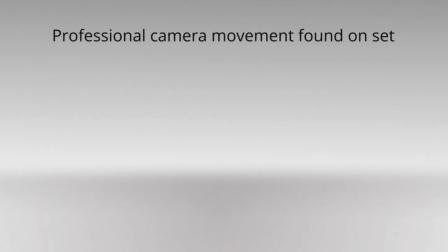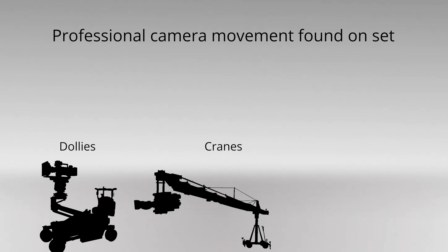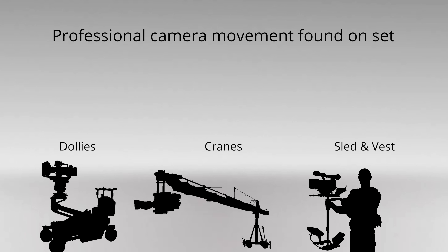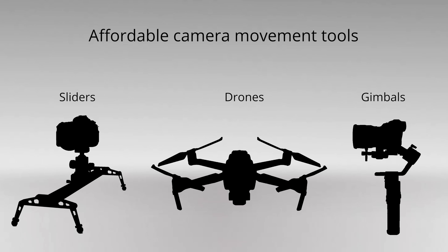Deliberate and steady camera movement is a cornerstone of good cinematography. It creates a more immersive and dynamic viewing experience. Outside of a tripod, there are many different camera supports that facilitate solid and professional camera movement. The first three you're most likely to see on set: dollies, cranes, and a sled and vest. For consumers, there are now affordable tools that give you similar camera movement — sliders, drones, and gimbals.